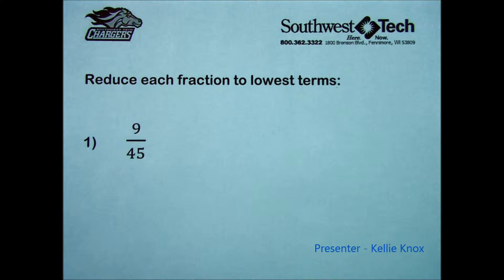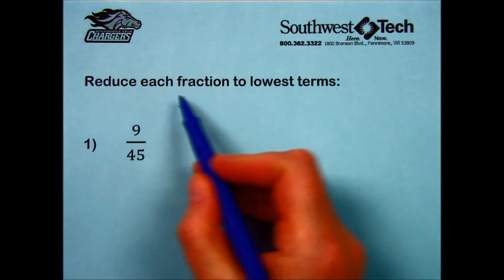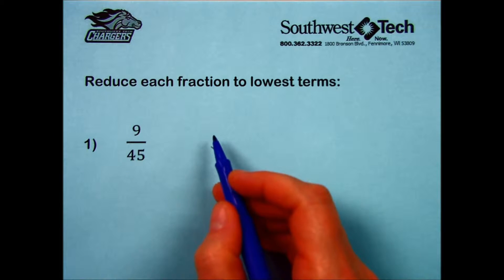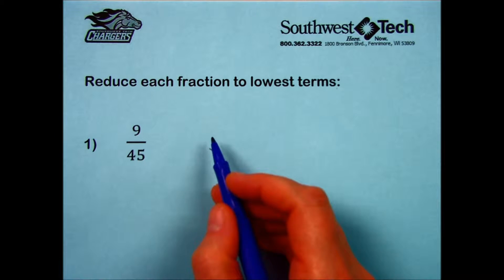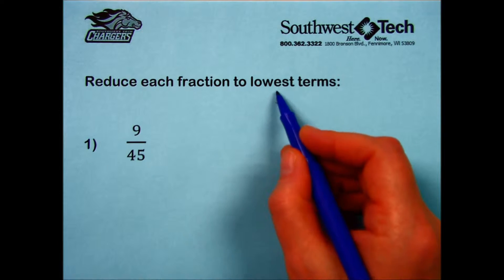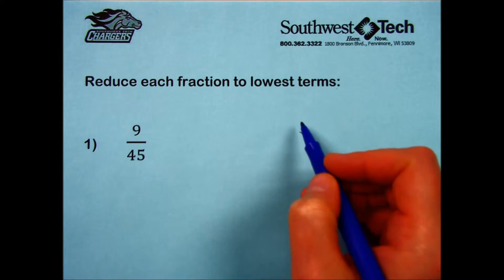Practice set 1-4: reduce each fraction to lowest terms. Lowest terms means to reduce the fraction to the point where it can be reduced no further. The numbers will be as small as possible in your answer, but it will still have the same value as the original.